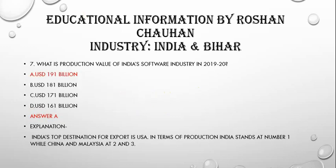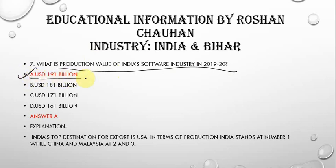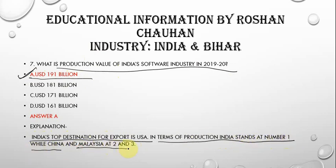The next question is: what is the production value of India's software industry in 2019-20? The correct answer is USD 191 billion. India is the top destination for software exports to the USA. In terms of production, India stands at number 1, while China and Malaysia are at 2nd and 3rd position.